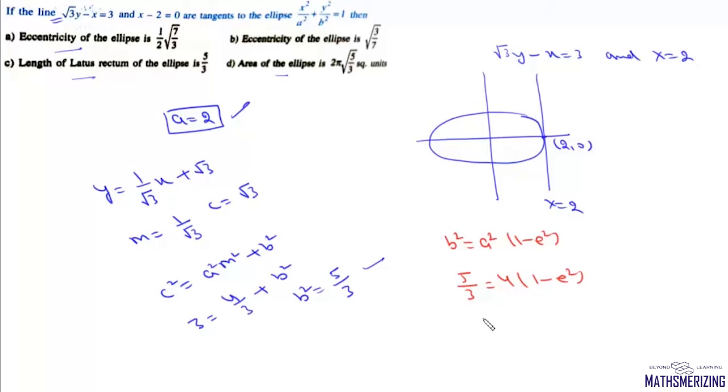So we can write this as e² = 1 - 5/12, so it will be (12 - 5)/12 = 7/12. So the eccentricity of this ellipse will be √(7/12), which is √7/(2√3), and that's your option number A.